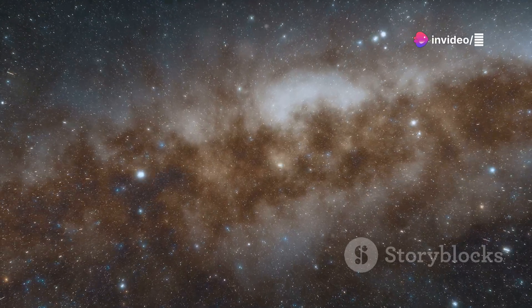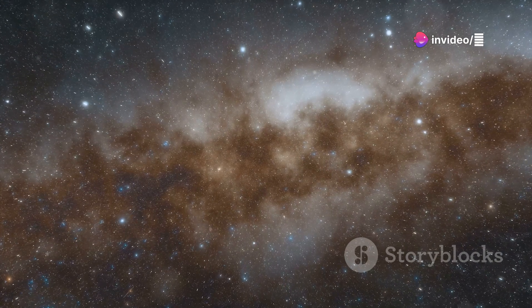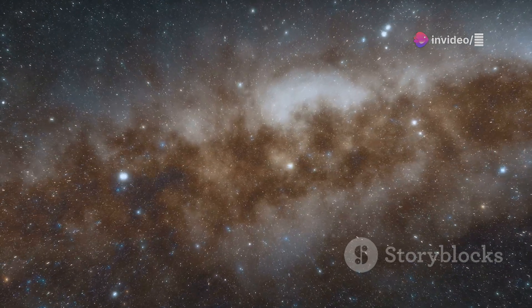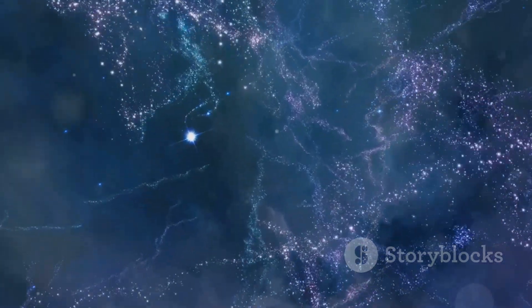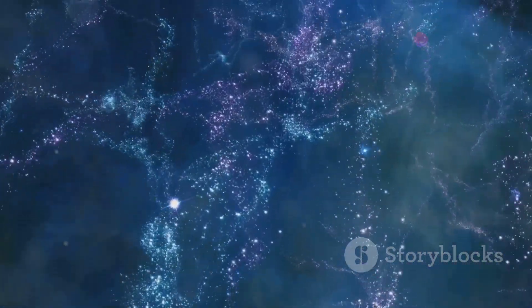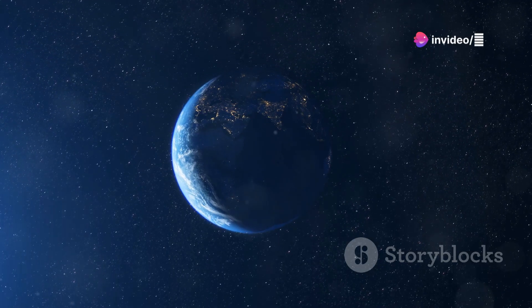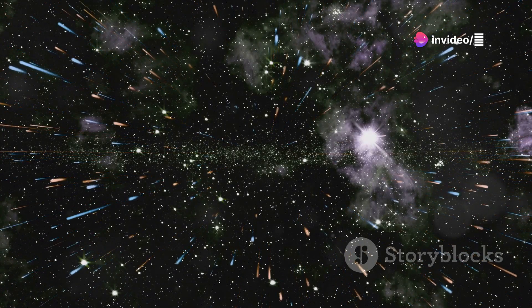The universe is about 13.8 billion years old. So the farthest we can see is about 13.8 billion light years away. This is the radius of our observable universe. It's a sphere centered on Earth. It encompasses everything we can currently detect.